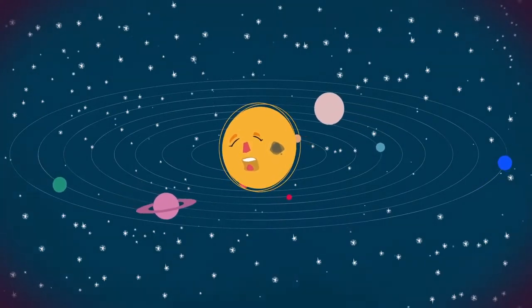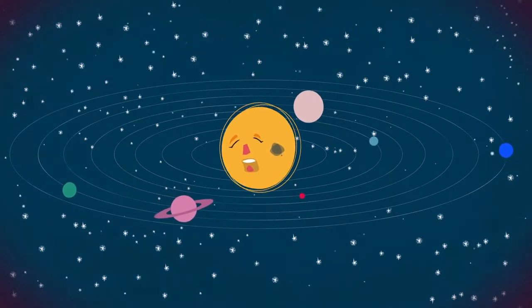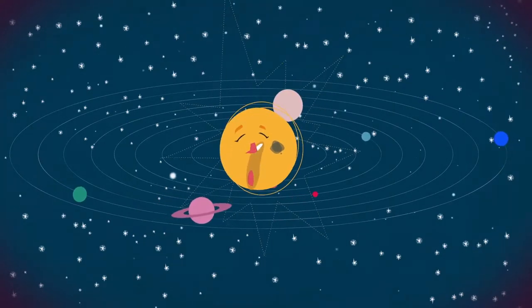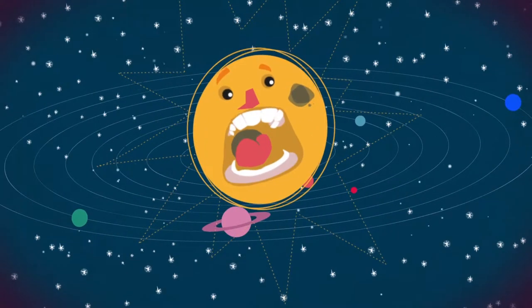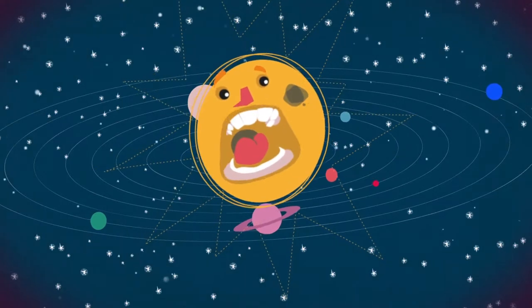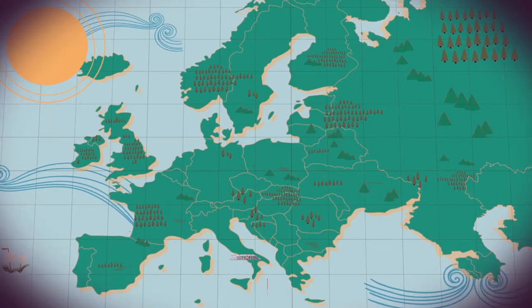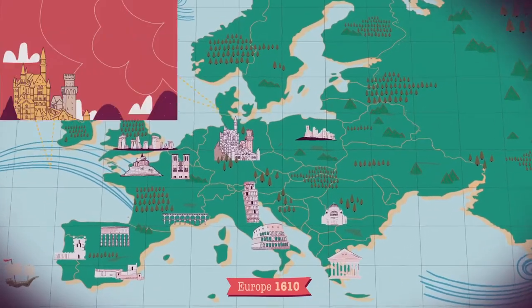Le macchie solari sono strutture scure sulla superficie della nostra stella, generate da un intenso campo magnetico che emerge dal suo interno. Sono state scoperte in Europa nel XVII secolo.